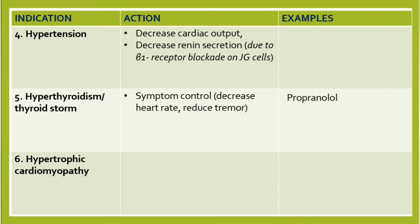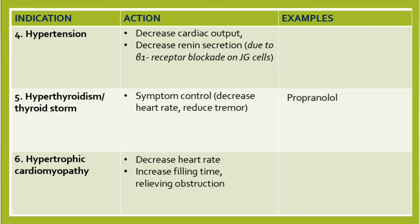The sixth indication is hypertrophic cardiomyopathy, which in most cases is an autosomal dominant trait. The interventricular septum bulges into the left ventricle, reducing the cavity and thus the volume of the left ventricle. This causes diastolic dysfunction and dynamic obstruction. Beta blockers decrease heart rate; by decreasing heart rate we increase filling time, thereby relieving obstruction.